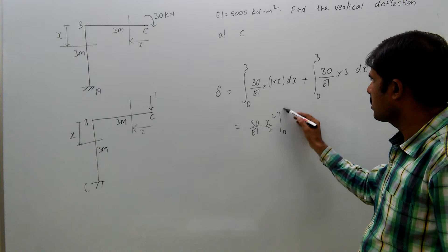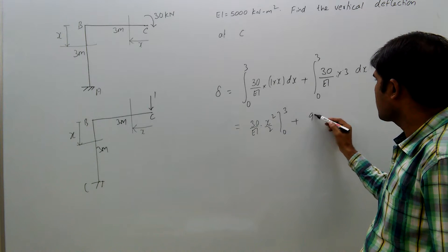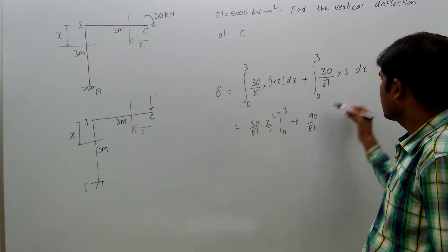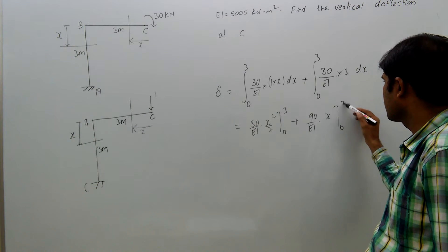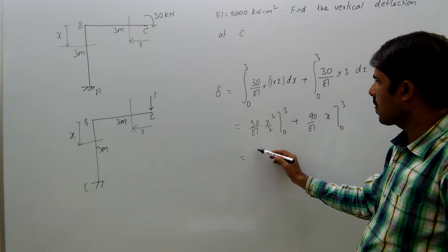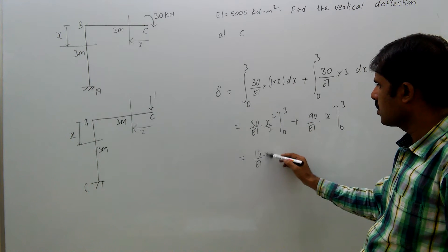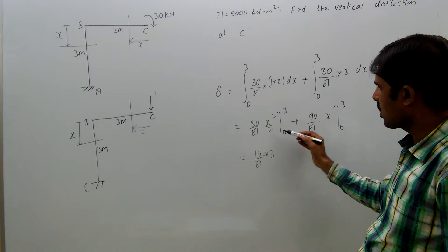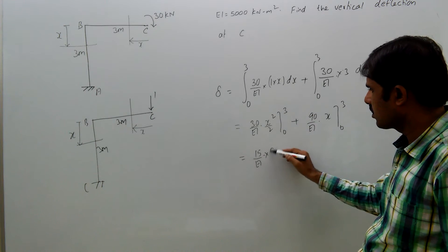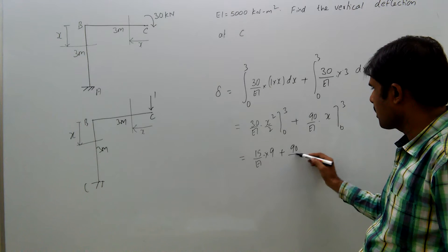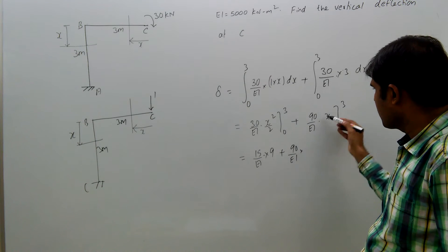Here minus 3 plus here plus here 90 by EI dx integration x 0 to 3, that equal to 15 by EI. 3 minus 0, the 3 square minus 0 square, 3 square means 9, plus 90 by EI x.